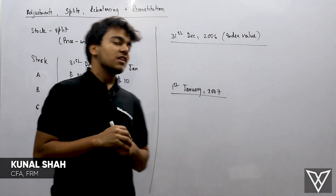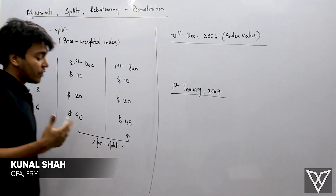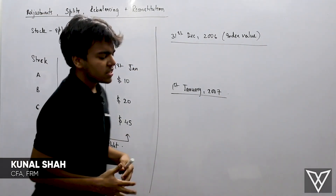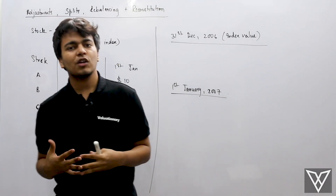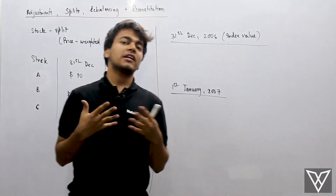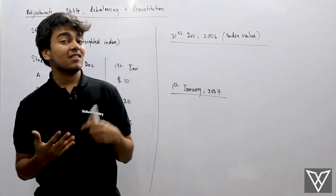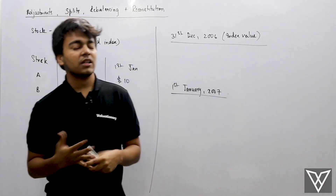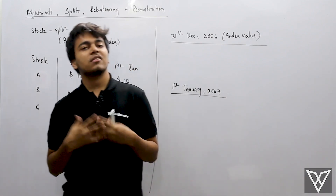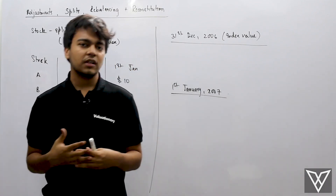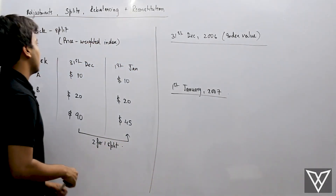Hi there, so we will be discussing about adjustments, the effect of adjustments, splits, rebalancing and reconstitution on the different indices that we had seen. So how does a price-weighted index have these things, how does a market-cap-weighted index have these things, is something that we are going to understand.